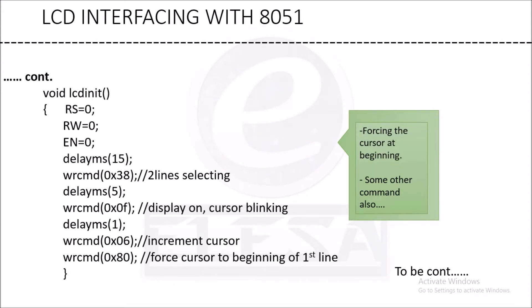Command 0x06 is for incrementing the cursor. Command 0x80 is for bringing the cursor to the first line. 0x80 is used for displaying data at a particular position — that is, first line, first position.